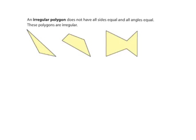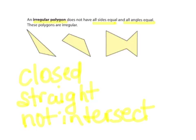There are also irregular polygons. They do not have all sides equal and do not have all angles equal. However, they are still polygons, so they are still closed. They still have straight sides. They do not intersect. So they are still all polygons, but they are irregular because their sides are unequal.